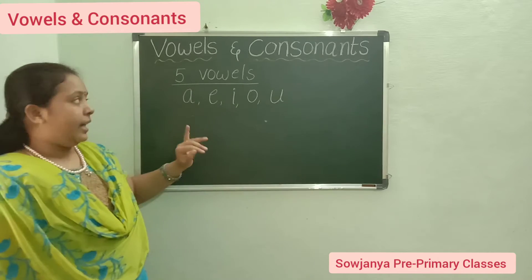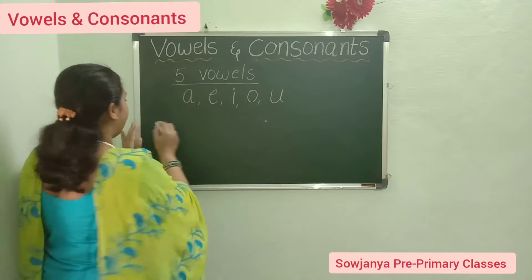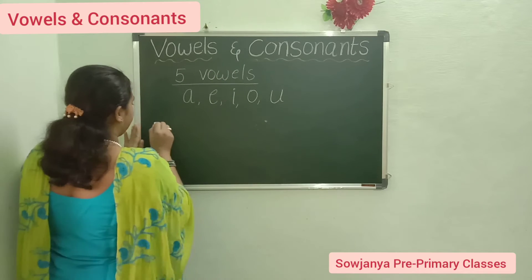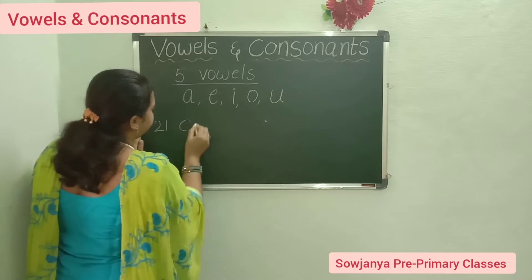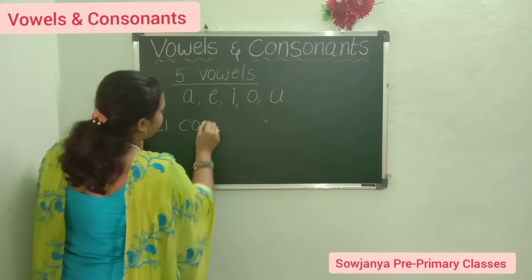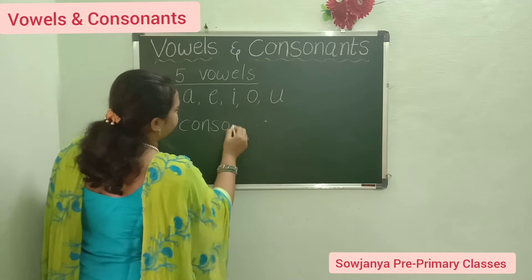And how many consonants are there? 21 consonants. How many consonants are there? 21 consonants.